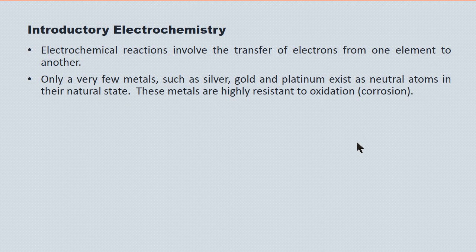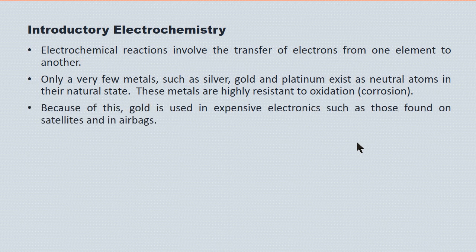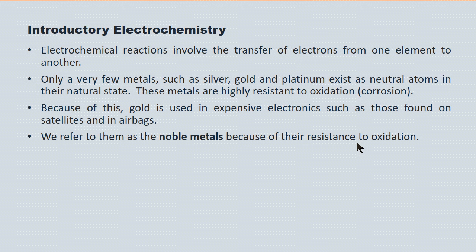Only a very few metals in nature — such as silver, gold, and platinum — exist as neutral atoms in their natural state. They're neutral atoms because they're highly resistant to oxidation. Because of this, we see gold used in very expensive electronics, such as that found on satellites or in airbags. We refer to this short list of metals as noble metals because of their resistance to oxidation.